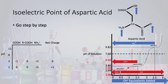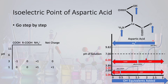Now let's move to a pH of 6. We are still far to the right of the main carboxylic acid, we are now newly to the right of the R group carboxylic acid, and we are still to the left of the quaternary amine. So aspartic acid at pH 6: the main carboxylic acid is still deprotonated, the R group carboxylic acid is newly deprotonated, and the quaternary amine is still protonated. So we have −1, −1, and +1, giving a total net charge of −1 at pH 6.